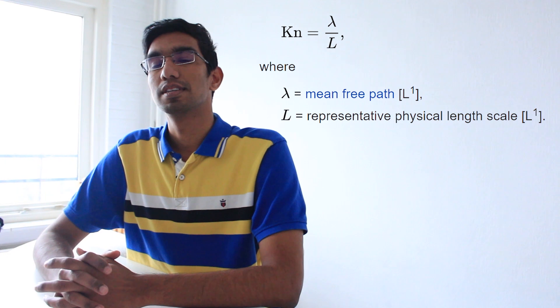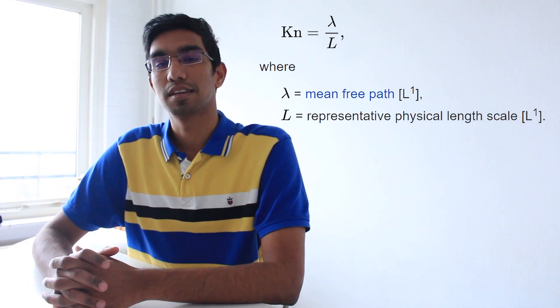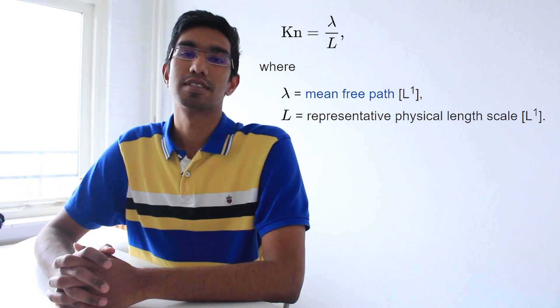So another question we asked you in the last video was the limit at which continuum mechanics hypothesis still holds. This limit is represented by a non-dimensional number known as the Knudsen number. Knudsen number is the ratio of the mean free path of a particle with the characteristic length scale of a flow field.